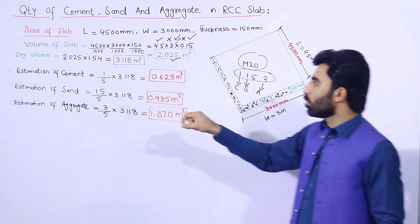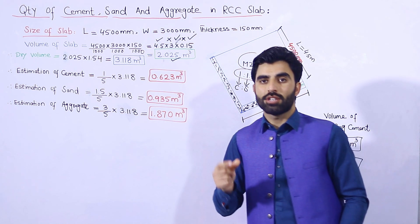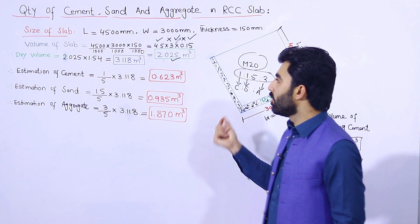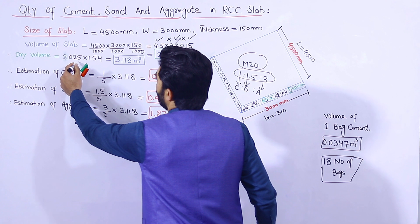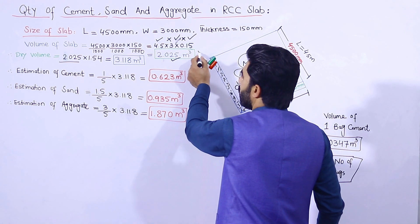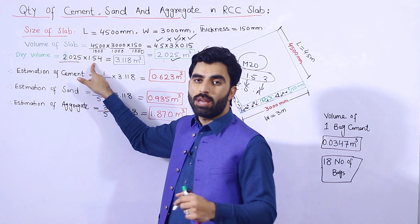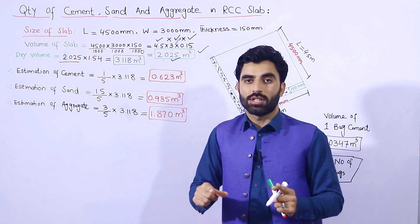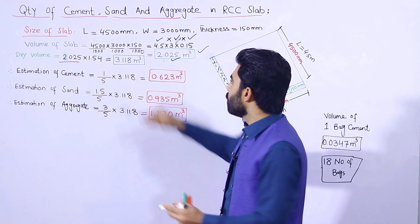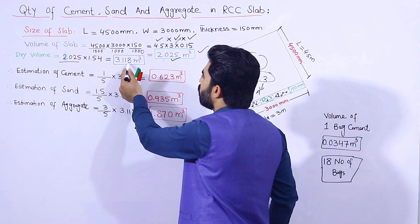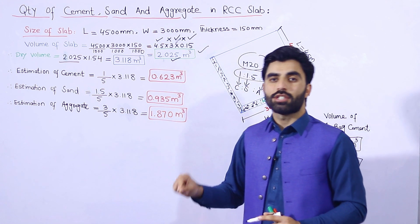Now let me convert to dry volume, because we will use dry material from the market. The dry volume of concrete is increased compared to the wet volume, so we multiply the wet volume by 1.54 — because dry volume increases by 54% of wet volume. Therefore, dry volume = 2.025 × 1.54 = 3.118 cubic meters. In this volume we will find the estimation of cement, sand, and aggregate.